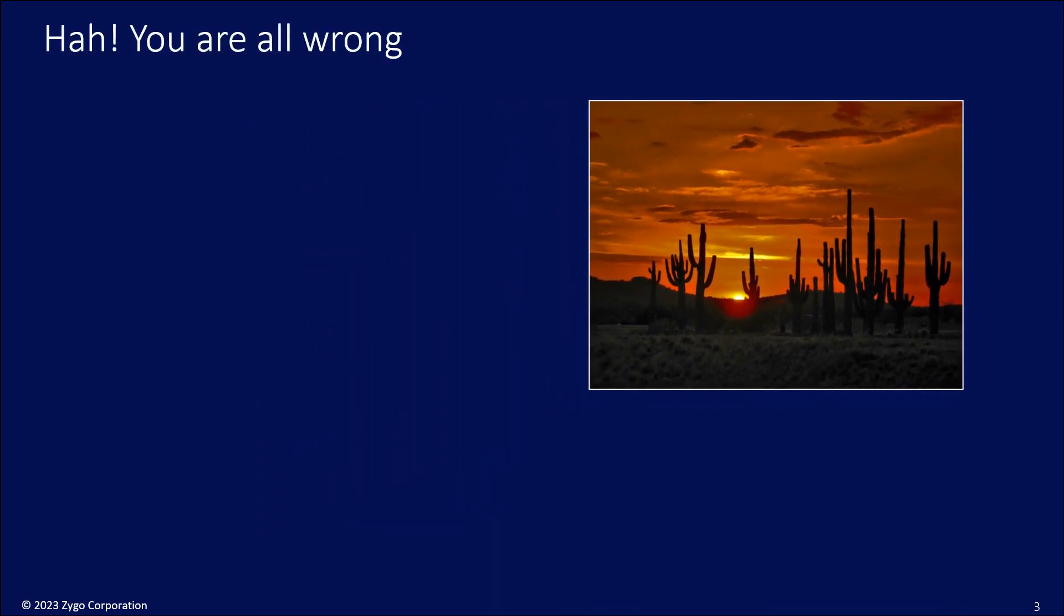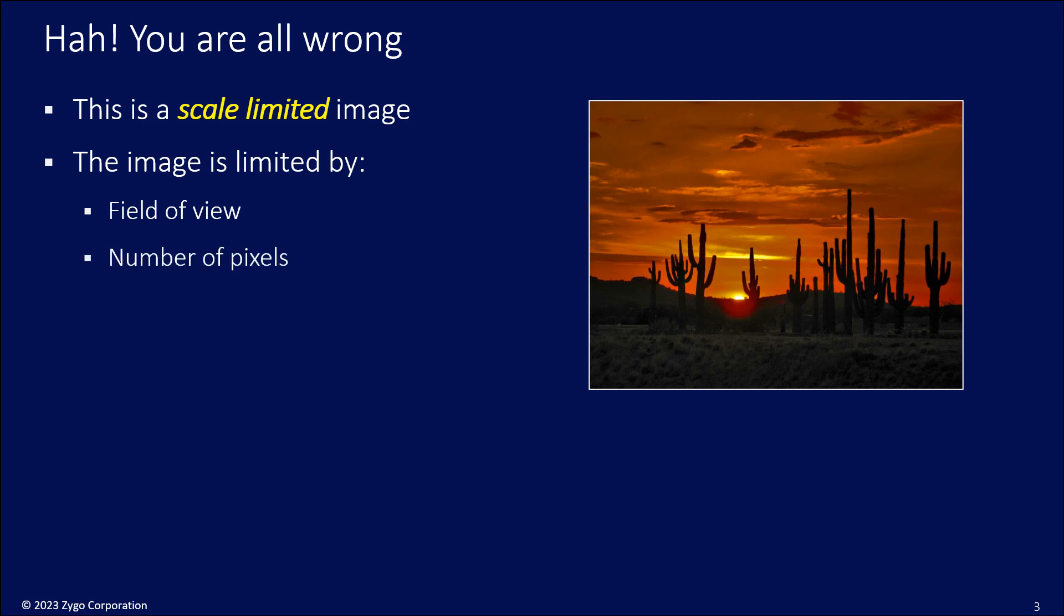What you actually have here is a scale-limited image of the scene. There's a lot that you don't know. The image is limited by the field of view, for example, there might be someone standing off to the left or the right of this picture. The number of pixels - you don't have the resolution that you require to see the individual needles on the cacti, so it's not really a complete picture of anything in this scene. There's a lot of uncertainty in this picture if you think about it.